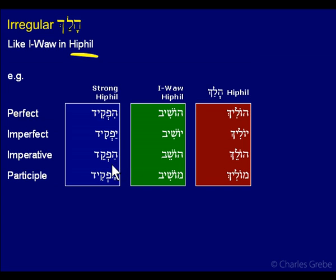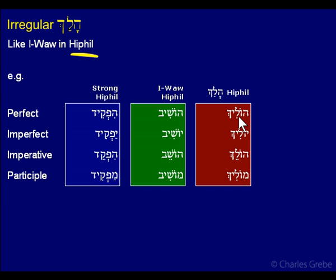For the Hifil imperative, Hafkid becomes Yoshiv, and Halakh gives you Holeikh — the last part is the same and the first part carries your Holam-Vav. For the Hifil participle, Mafkid becomes Moshiv with a Holam-Vav, and Halakh gives you Molikh with a Holam-Vav. So Halakh behaves like a first-Vav verb like Yashav in both the Kal and the Hifil. The mnemonic is: think of sitting (Yashav) and walking (Halakh) as two things that go together.